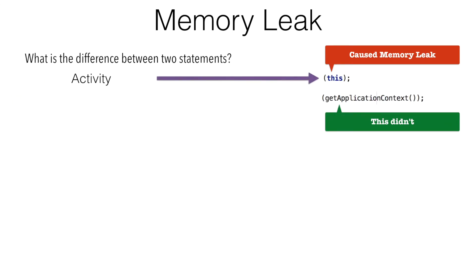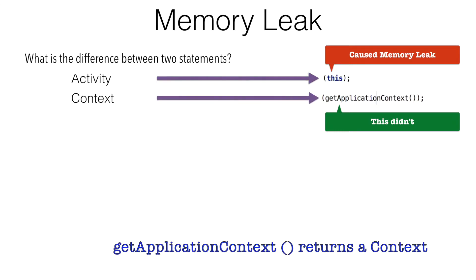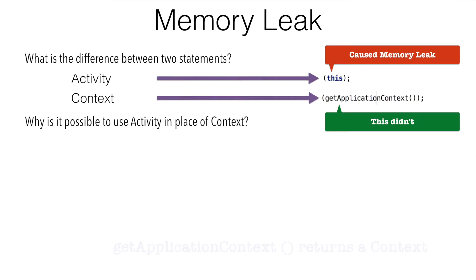In the first case, we have used an activity and in the second case, we have used a context. Now the question is why can I pass an activity in place of a context? That's because activity is a context. It is a subclass of a context. Well, if they are one and the same, why is the first statement causing the memory leak and the second statement is not?